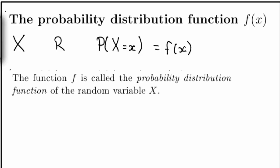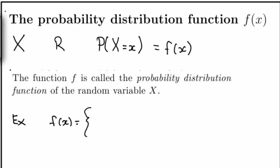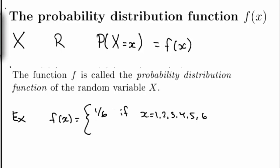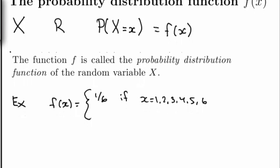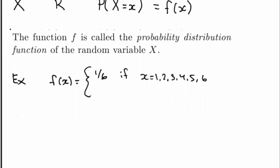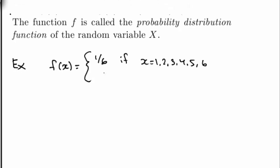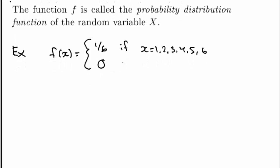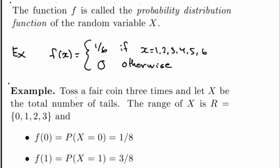This function f is called the probability distribution function of the random variable x. For example, if you toss a fair dice and let x be the result of the toss, then we have f of x being equal to 1 over 6, if x is any of the values 1 through 6, and if we're outside the range, then f of x is equal to 0.